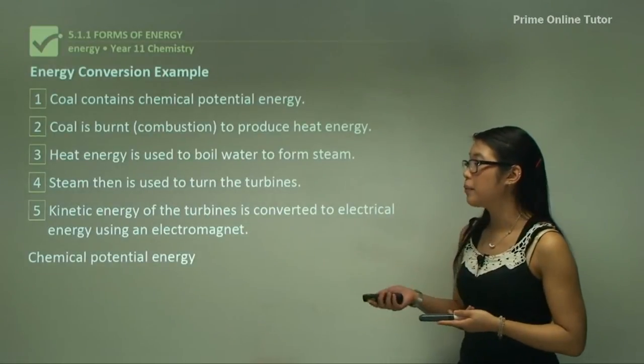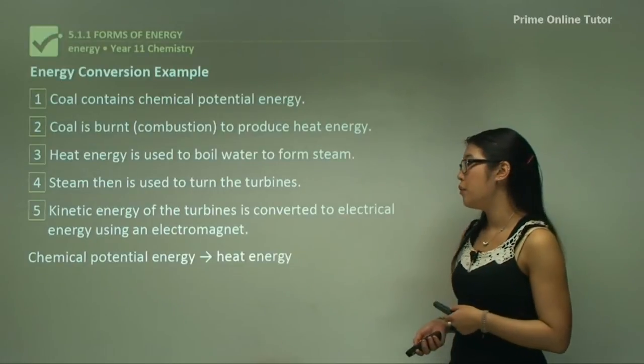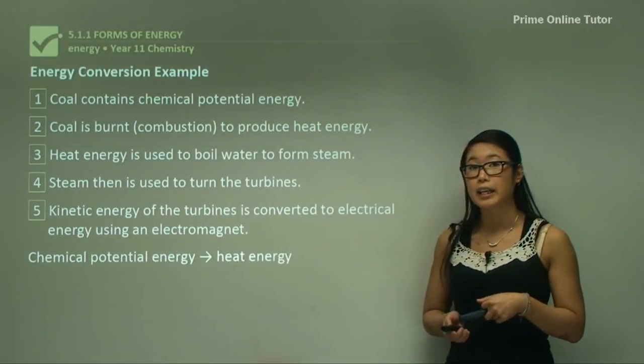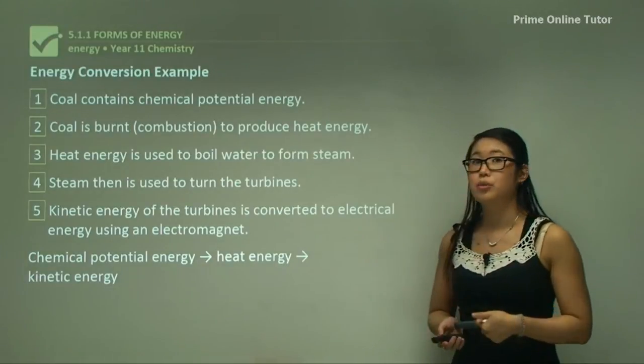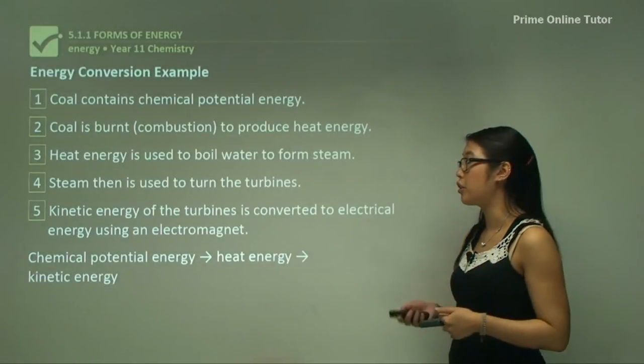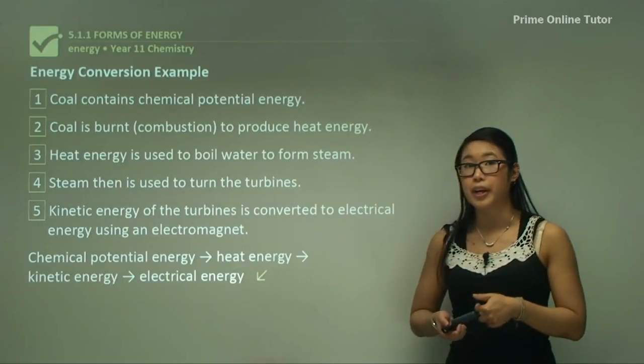So in summary it's the chemical potential energy in the coal which is firstly converted into heat energy when we combust it. It's then changed into kinetic energy when we're turning the turbines and then finally forming electrical energy.